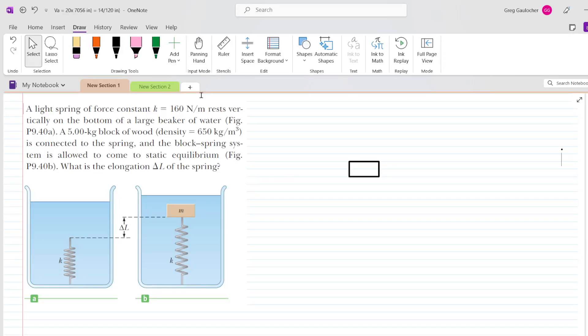Take a moment to pause the video and reread the question before listening on. Our first step in trying to determine the elongation, delta L, of the spring is to draw the forces that are acting on this mass.